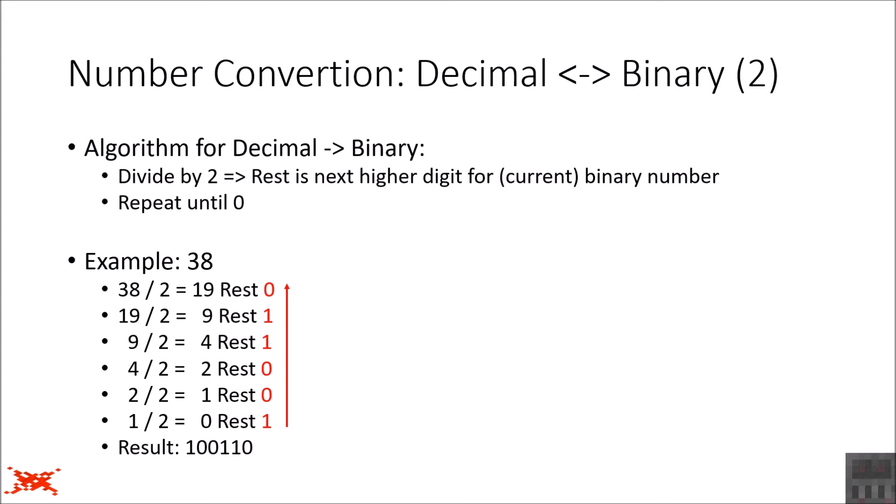1-0-0-1-1-0. So that's the binary representation of the decimal number 38. The other way is to strip down the number into powers of 2. So 38 is 32 plus 4 plus 2. You only need to know the values for the digits in a binary number, then put the digits that have a corresponding value in the sum to 1 and all others to 0. That only really works for small numbers, maybe up to 1024, which is 2 to the power of 10. Everything beyond that, I would use the algorithm.